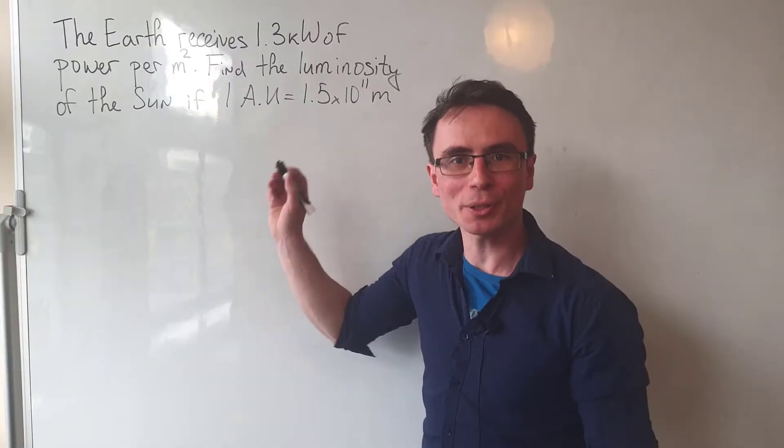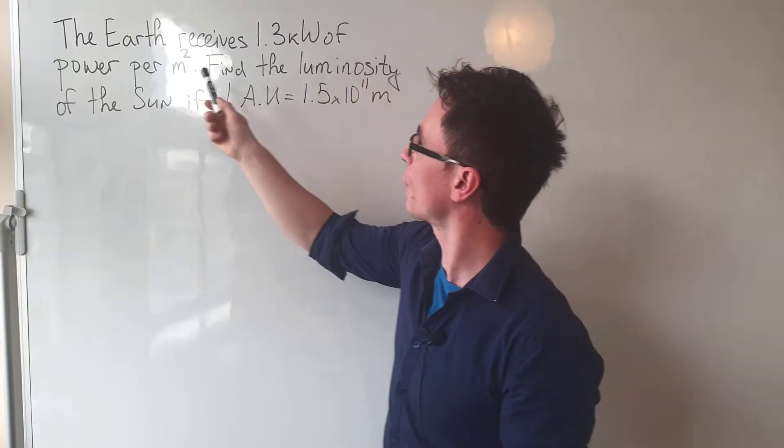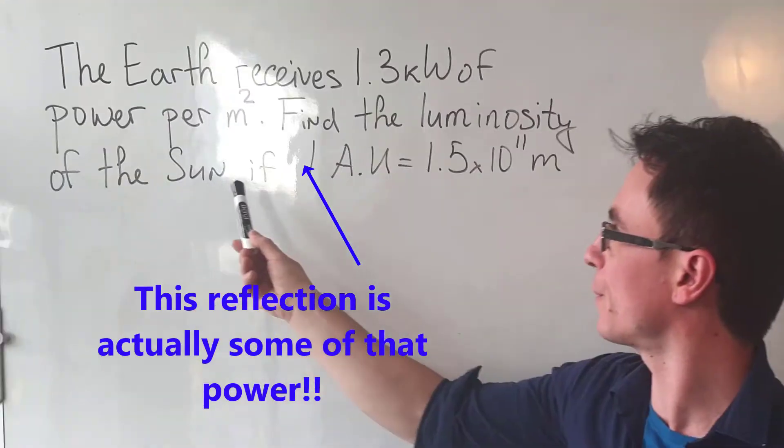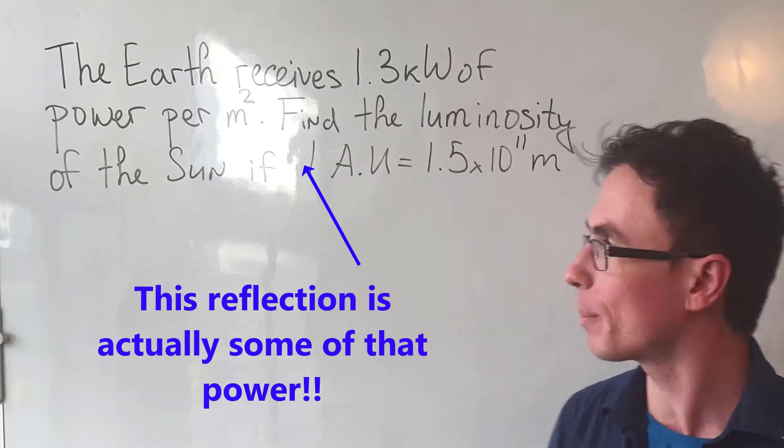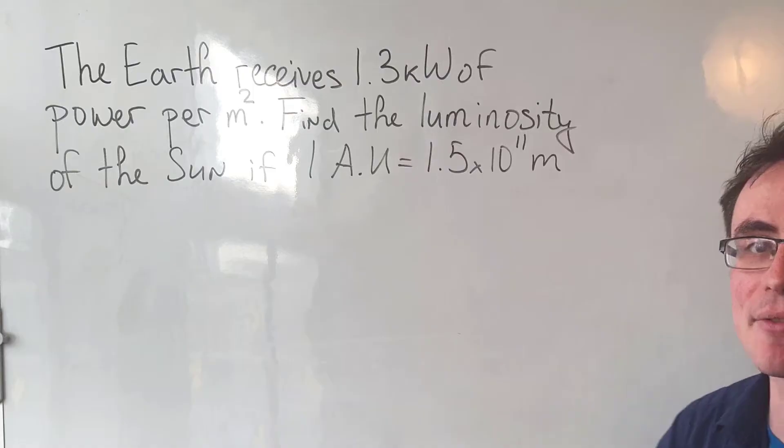Let's revise astrophysics. Have a look at this problem. The Earth receives 1.3 kilowatts of power per square meter. Find the luminosity of the Sun if one astronomical unit is equal to 1.5 times 10 to the 11 meters.